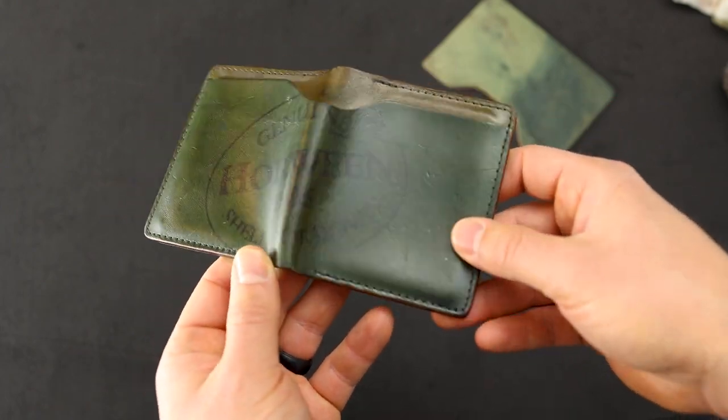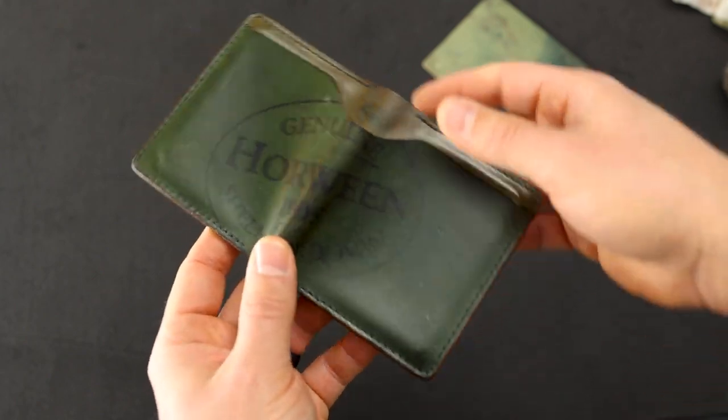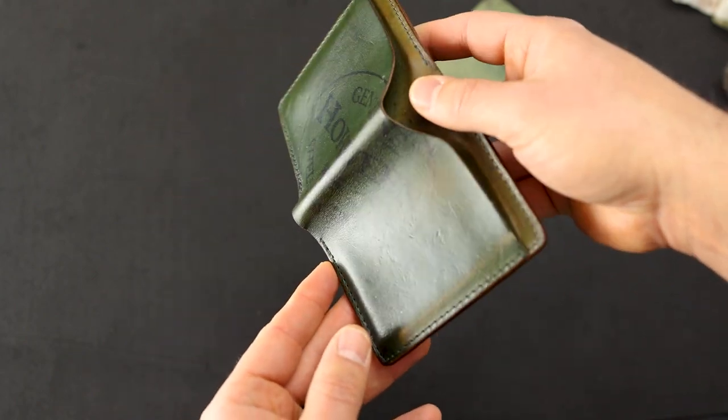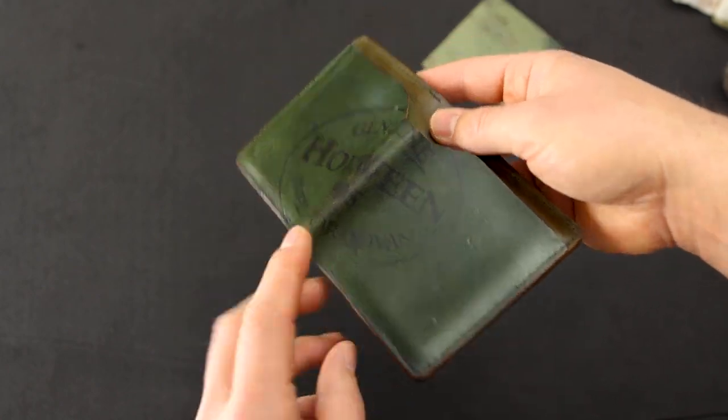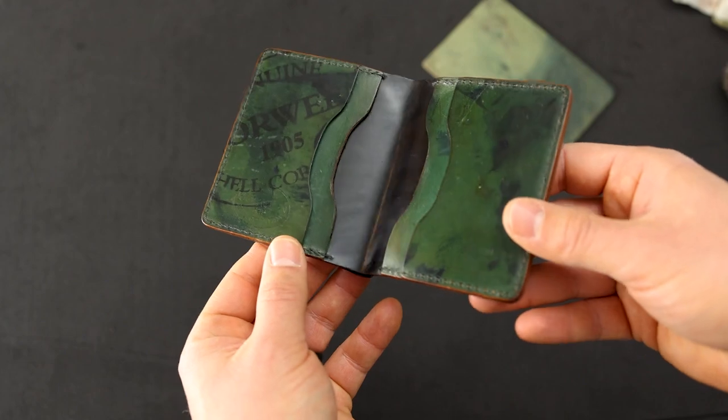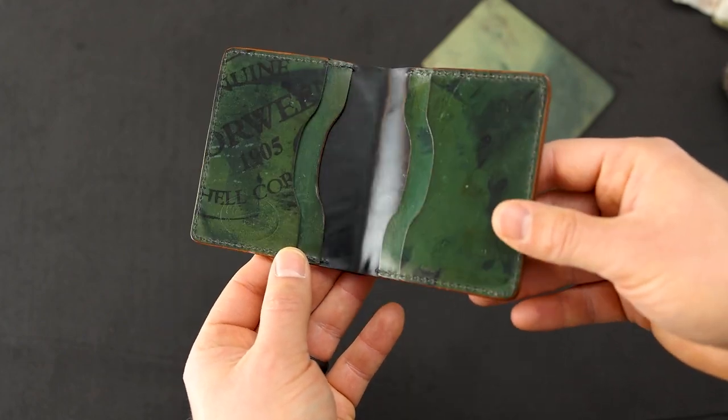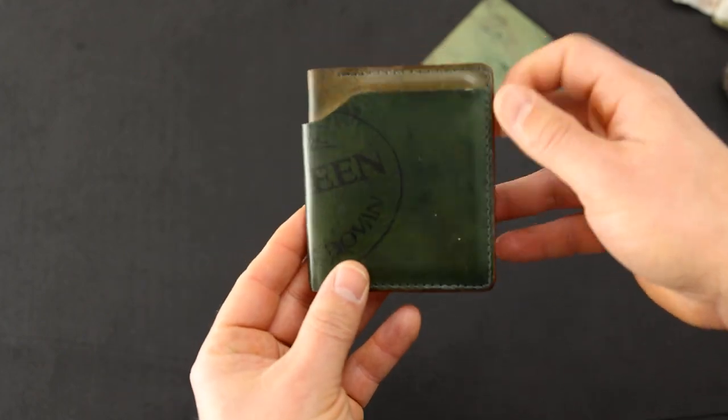Although Jeff has applied a little bit of Saphir cordovan cream to this one, you can expect the shell cordovan on the reverse side to age a little bit this way just naturally. Let me give you a look at the inside also because the inside card holders have also aged very nicely on this particular Tony the Ant.